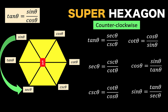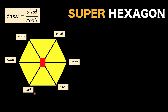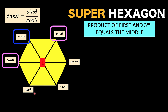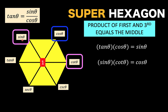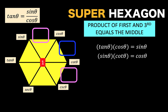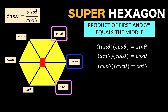Now we have 12 identities — let's add more. This time, take three consecutive functions in the hexagon and multiply the first and the third; the product equals the function in the middle. So tangent theta times cosine theta equals sine theta, and sine theta times cotangent theta equals cosine theta. Then multiply cosine times cosecant to get cotangent.